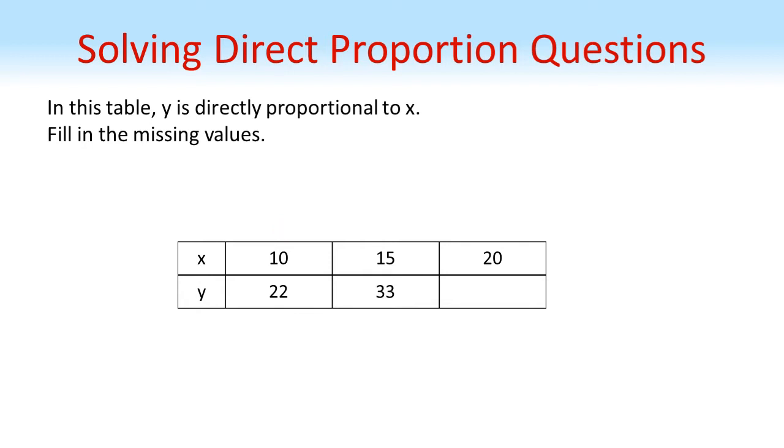For the last column, we're going to do the same thing. So we'll look at what's happened to get from 10 to 20. That's times by 2. So we do the same for the y. 22 times 2 is 44.